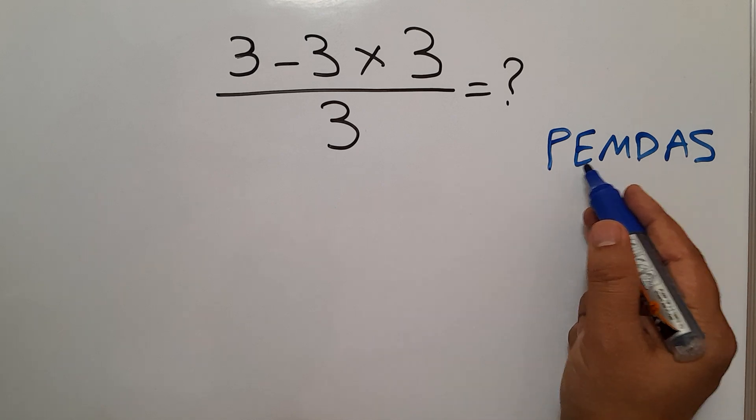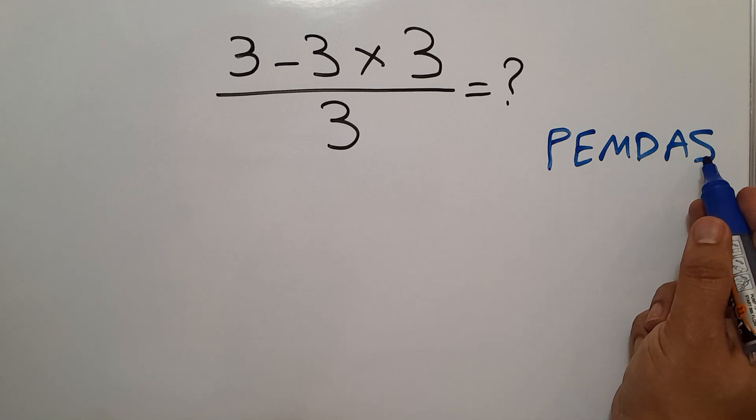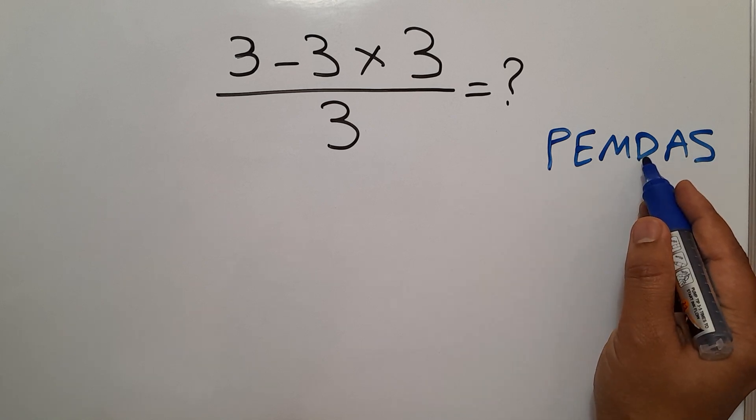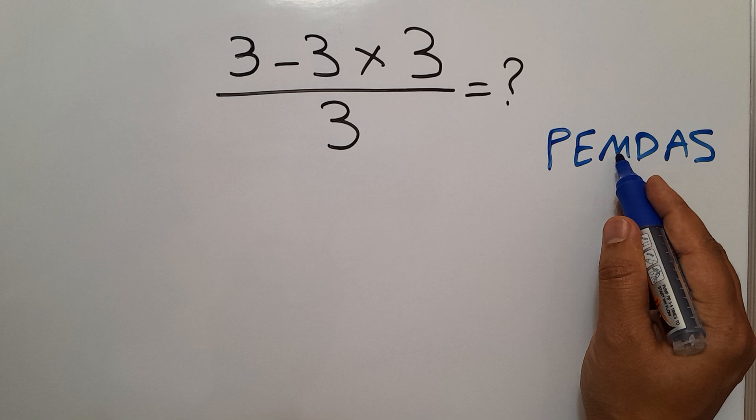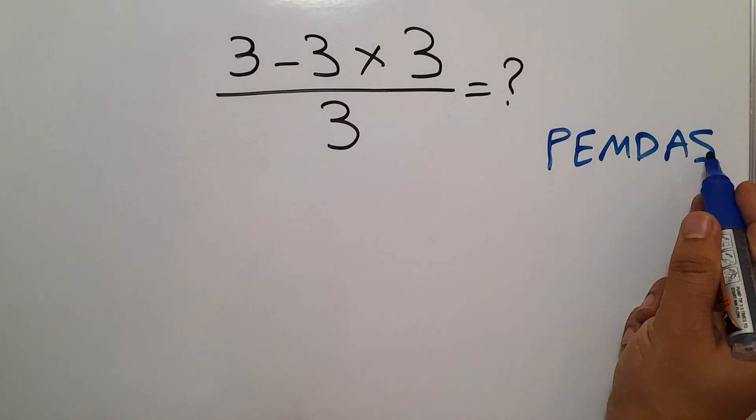Then exponents, then multiplication and division, and finally addition and subtraction. Remember that multiplication and division have equal priority and we work from left to right, and the same applies to addition and subtraction.